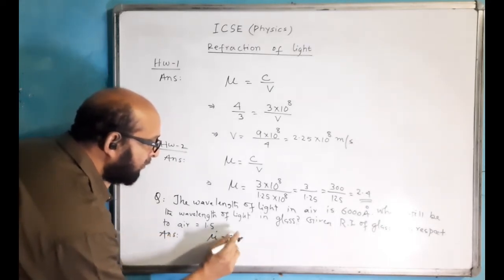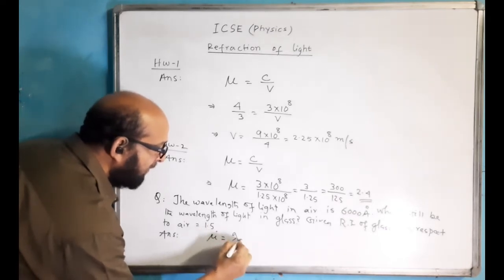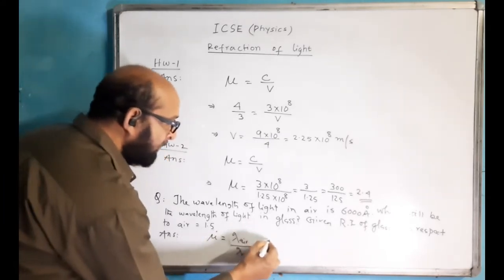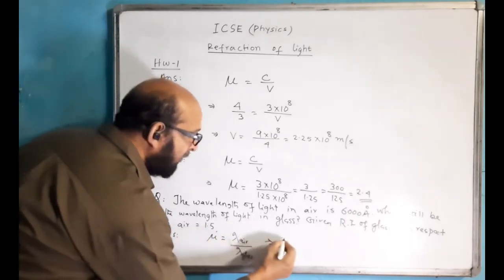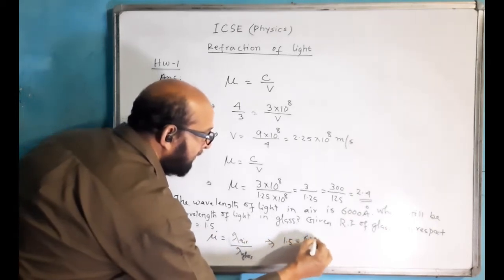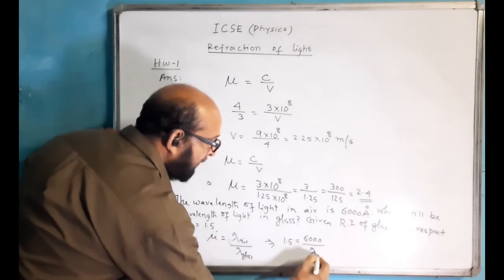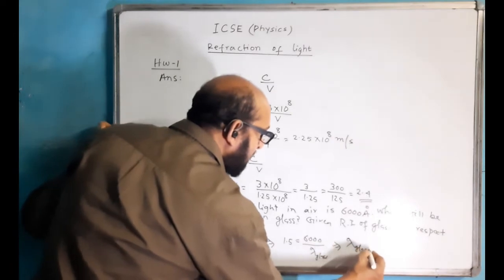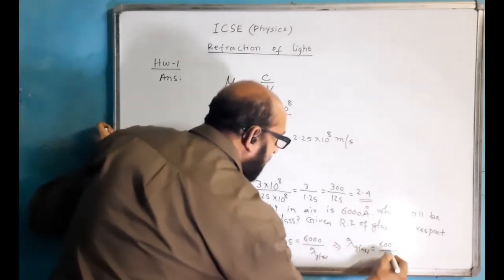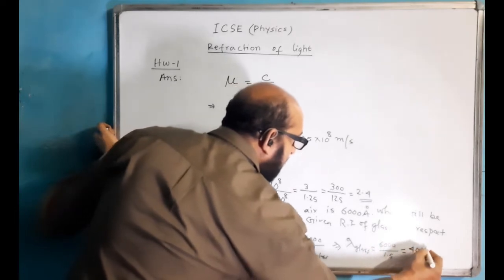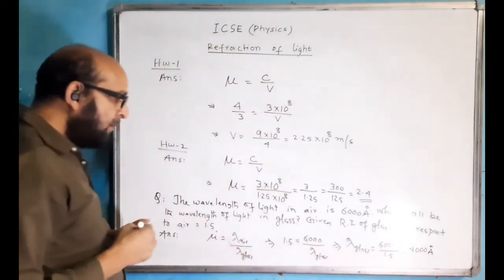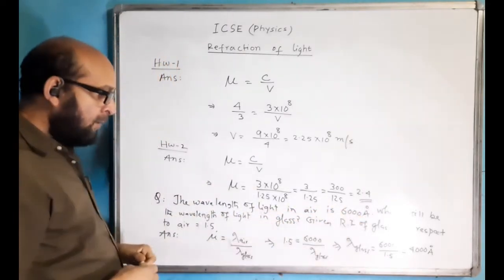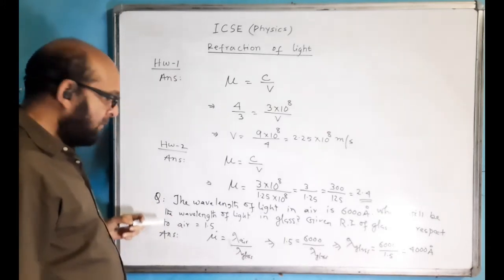We get again from the formula: mu is equal to wavelength in air upon wavelength in that medium. That medium is glass. Put the value of mu = 1.5, wavelength in air = 6000, upon lambda in glass — we have to find this. Lambda in glass will come: 6000 upon 1.5, the answer is 4000 angstrom.